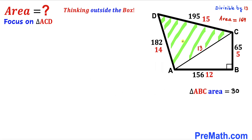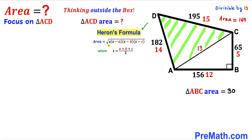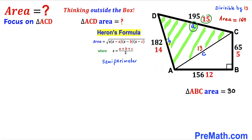Now let's focus on triangle ACD and calculate its area using Heron's formula: area equals the square root of S times (S minus a) times (S minus b) times (S minus c), where S equals (a + b + c) divided by 2 — the semi-perimeter. Labeling the sides: lowercase a is 15, lowercase b is 14, and lowercase c is 13.